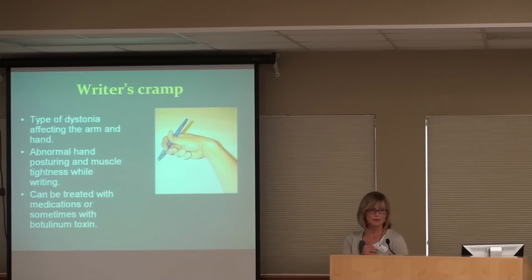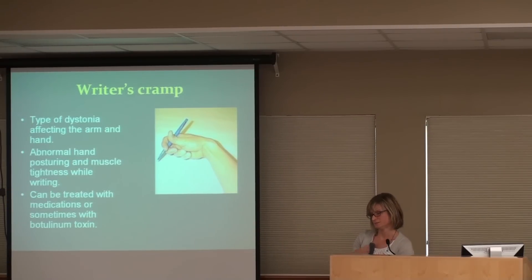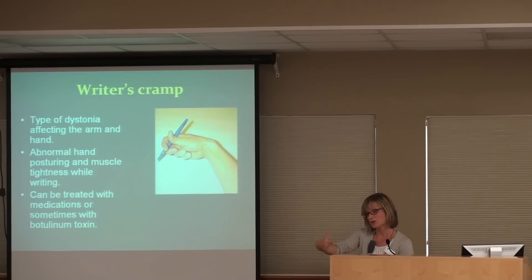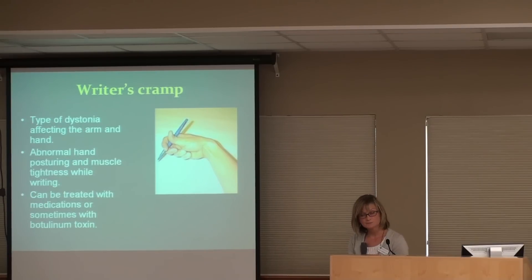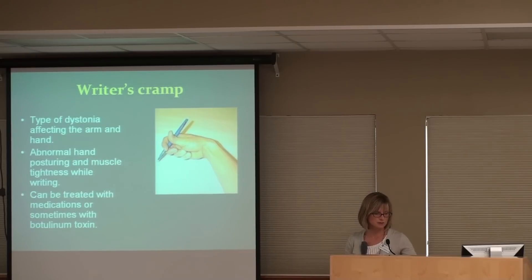Writer's cramp is fairly common but still much less common than essential tremor. It's a type of dystonia that affects the arm and hand. The symptoms include a person's hand getting tighter and tighter as they write — their hand might even twist in or their thumb might elevate uncontrollably. This condition can be treated with certain medications and also with botulinum toxin injections. Writer's cramp doesn't usually cause other symptoms or lead to other conditions like Parkinson's.